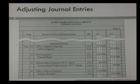Let's go back and review. Once you have completed your worksheet and your financial statements, you are going to go back to the general journal and create the four adjusting entries and then post them to the general ledger. The purpose of this is to get the accounts in the general ledger up to date.